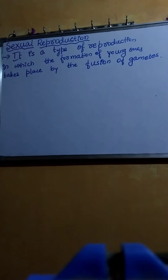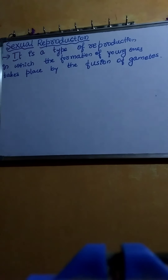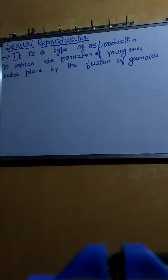Sexual reproduction is an advanced or improved type of reproduction compared to asexual reproduction. Sexual reproduction increases variations and it prevents overcrowding, meaning only a few young ones are produced. Hence it prevents overcrowding and develops more variations in the young ones.